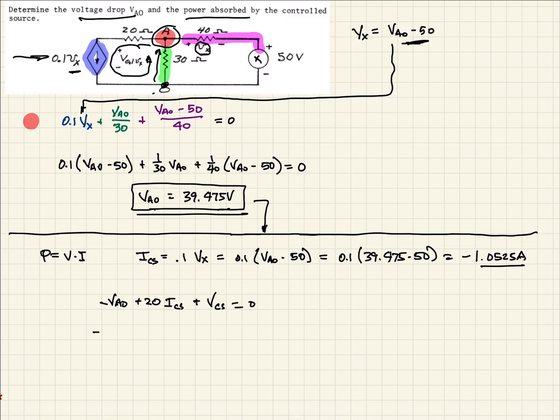So this is minus 39.475 plus 20 times we found the current right here. So that's negative 1.0525 plus V of our current source equal to 0. So now we have one equation, one unknown. And when we solve for V of our current source, we should get 60.525.